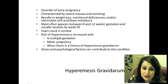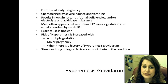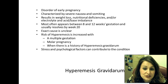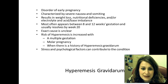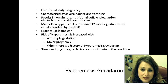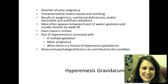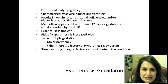Hyperemesis gravidarum is a disorder of early pregnancy, often characterized by severe nausea and vomiting. It results in weight loss, nutritional deficiencies, electrolyte imbalance, and acid-base imbalances. It most often appears between 8 and 12 weeks gestation and is usually resolved by the 20th week of pregnancy. The exact cause is unknown, and it is different from regular morning sickness.